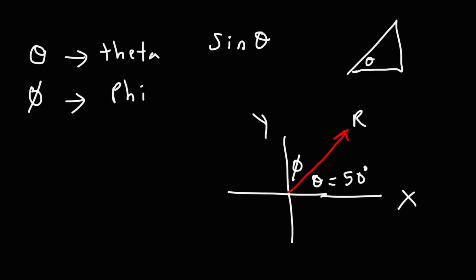The other angle between the vector and the y-axis, this is typically phi, but it can vary, but sometimes you'll see the other angle is phi. And that's usually complementary to theta. So this one is going to be 40 degrees.